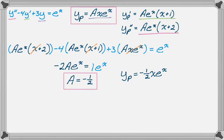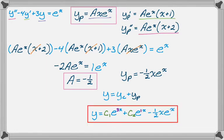And then overall, y is y sub c plus y sub p. We found y sub c a while back. So y is c1 e to the 3x plus c2 e to the x minus one half x e to the x. And that's it. So when you're going through this process, and you pick your trial, and then you look back at the complementary solution, and the trial is already there, multiply your trial by x. And that's your new trial solution. It's not that bad. I hope you found this helpful, and good luck.